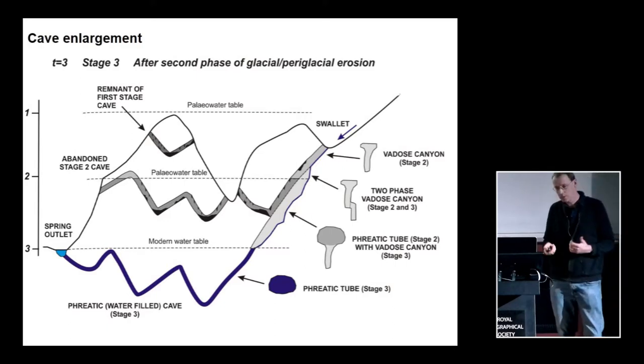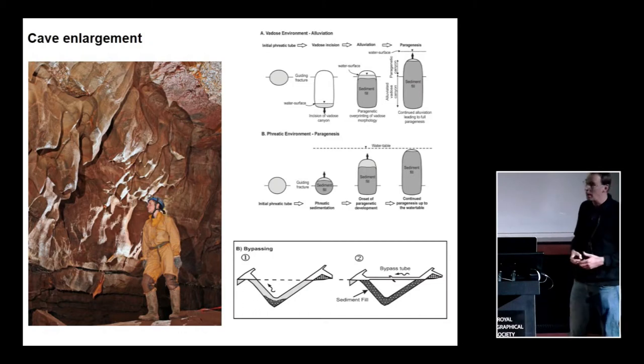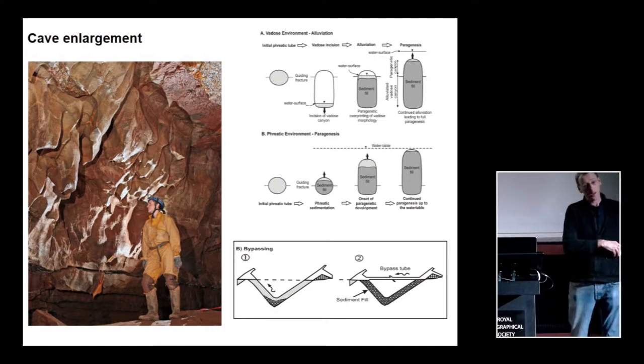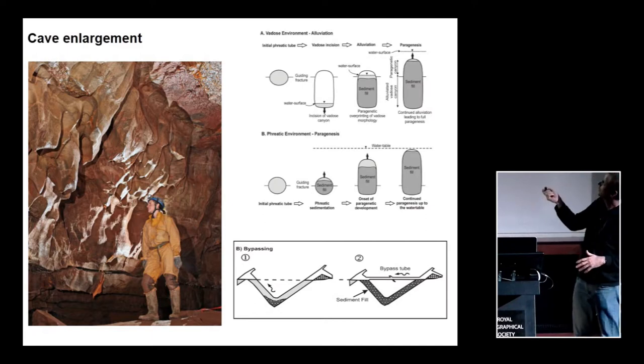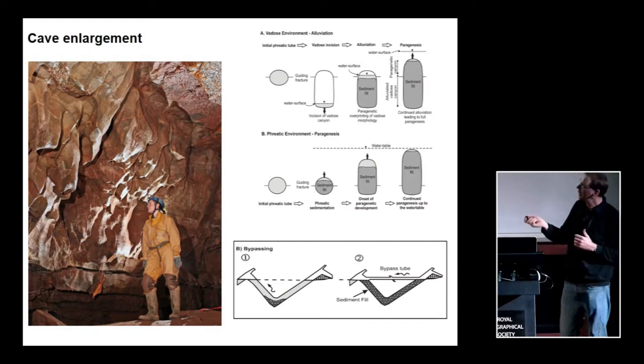Once you've got a conduit and the passage formed, things can happen to it. Outside environments may change. You may suddenly get a lot more sediment coming in due to glaciation perhaps. And you might have your vadose canyon. But then you might get stuffed full of sediment. And you might get a lot of passages being filled up to the roof with sediment. And instead of being eroding downwards, the passages may then start to be eroded upwards because of the sediment fill. Similarly, if you've got a phreatic tube and you've got a lot of mud coming in or sediment, again, the floor may be covered by sediment so that only the roof's exposed, so the passage actually erodes upwards.